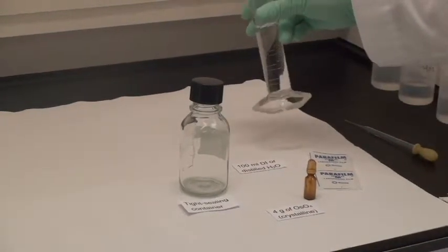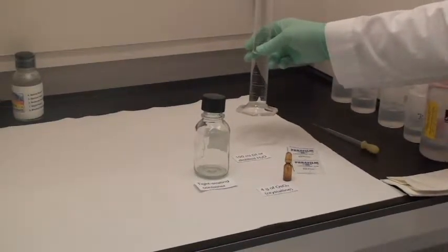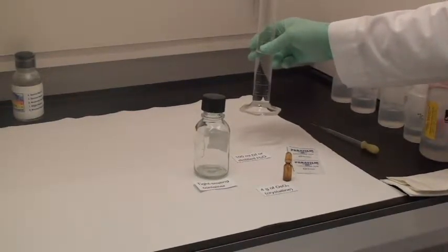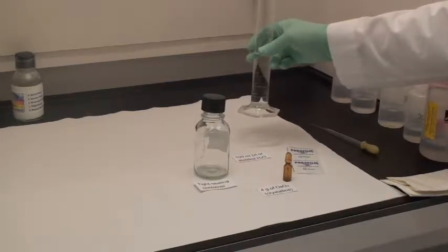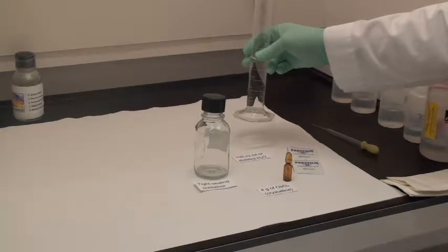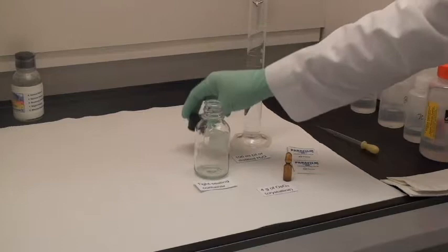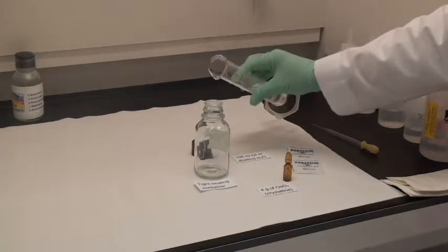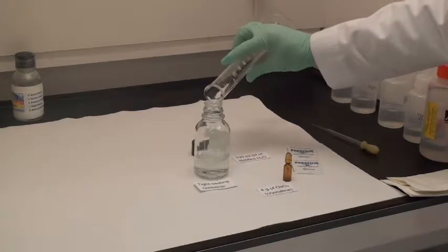I'm going to add the water to the container. The water volume is determined by how much solution you need and the concentration that you desire and the osmium tetroxide mass that you have in the ampule. I'm going to open and pour our predetermined amount of water into the container.